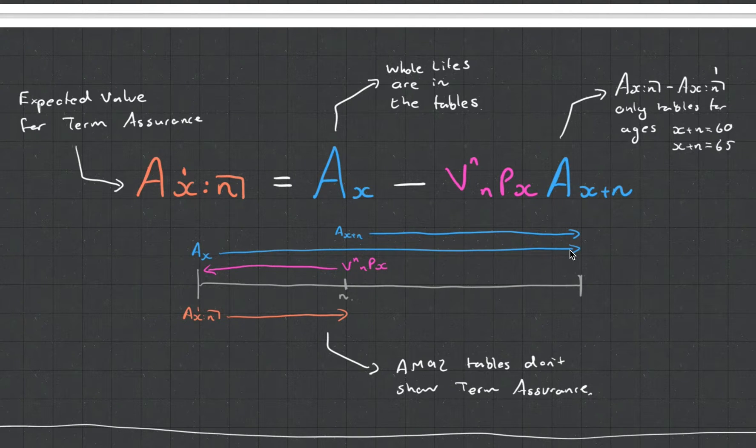So what we simply do is we subtract another whole life assurance with an adjusted age at time N. But that's not the whole story. What we then have to do is because this guy over here is sitting at time N, we have to discount him back to our time zero, where we are at the moment.